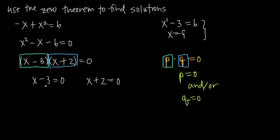We can solve each of these linear equations just like we solved our linear equation earlier — we're back to something really simple. For the first one, we add three to both sides and get x equals positive three. For the second, we subtract two from both sides and get x equals negative two.